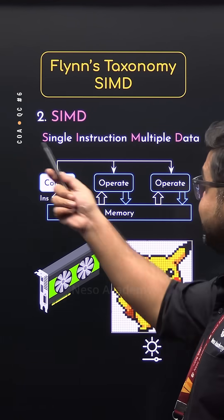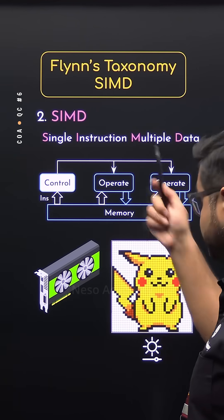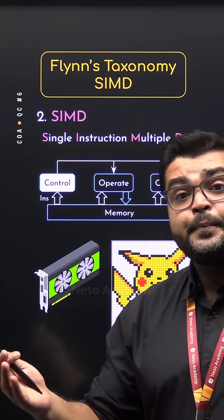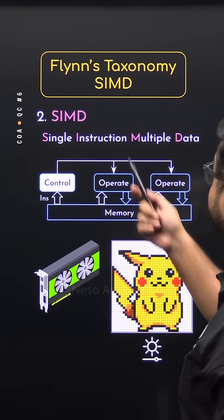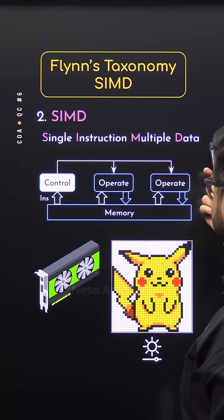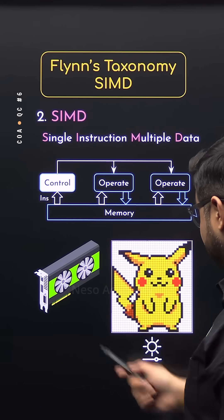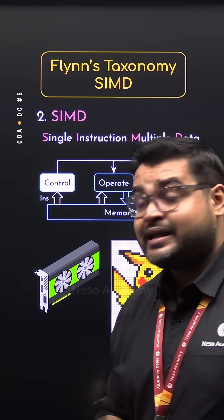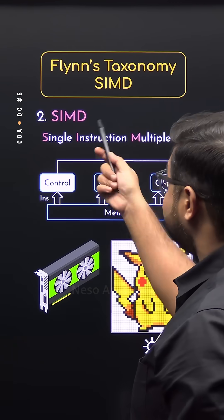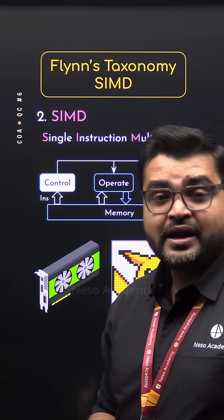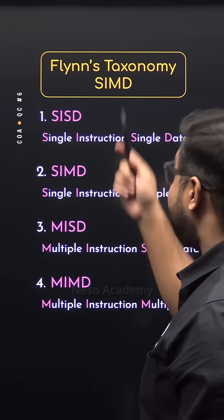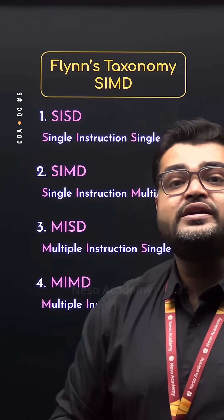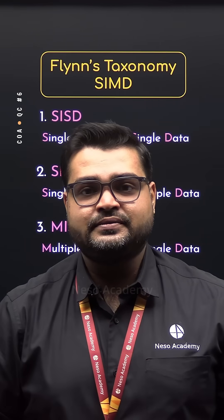That is, a single instruction — increase the brightness — being operated on multiple data sets, that is, every pixel of the image. And that's what SIMD is all about. Want to learn about the remaining architectures? Follow our COA course at Nassau Academy.